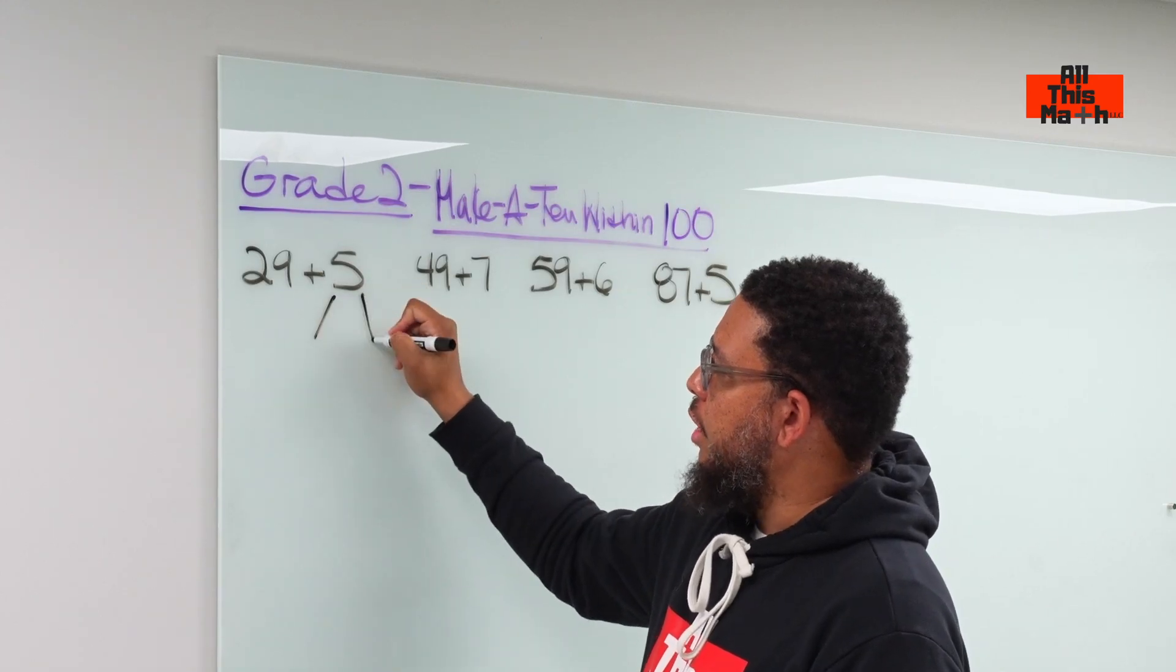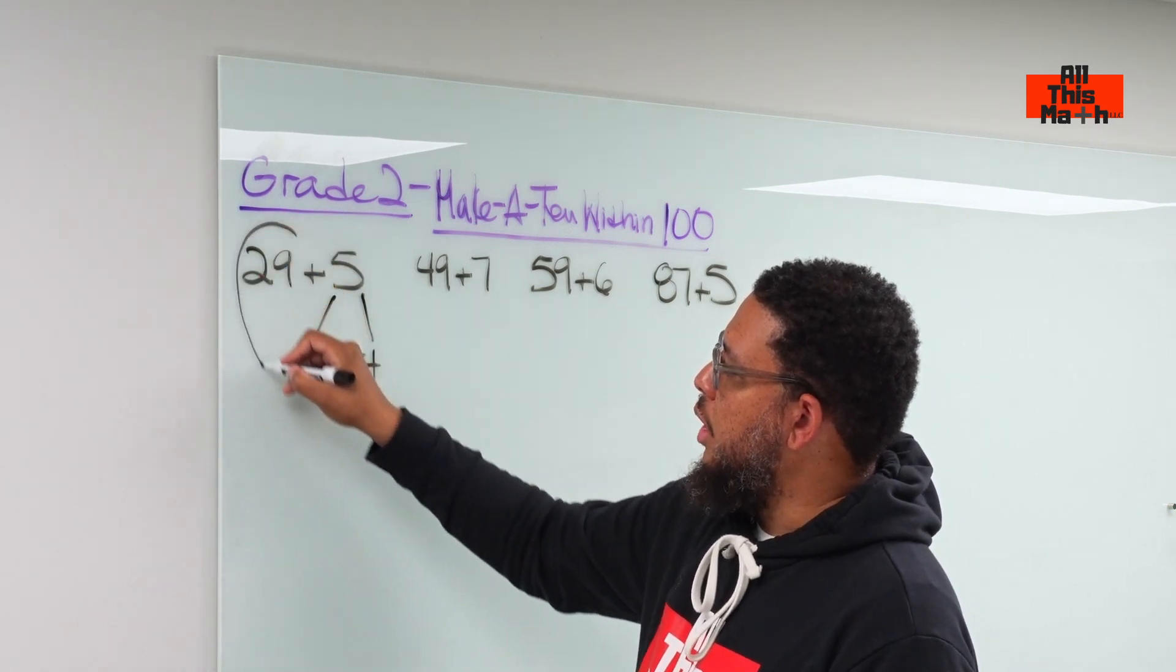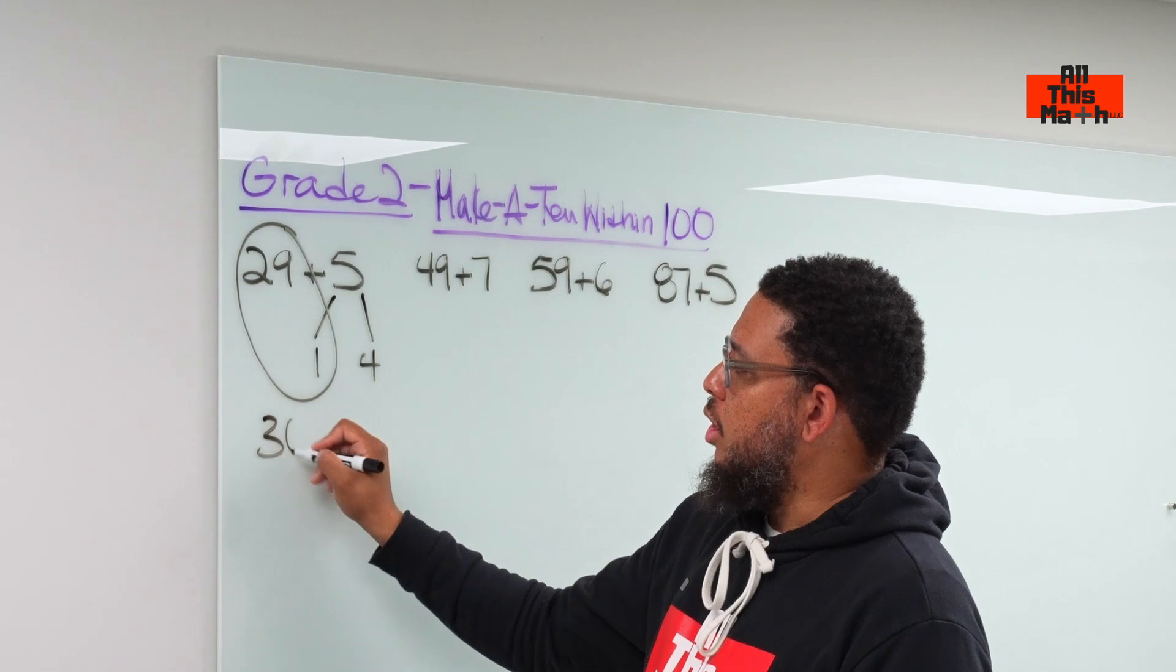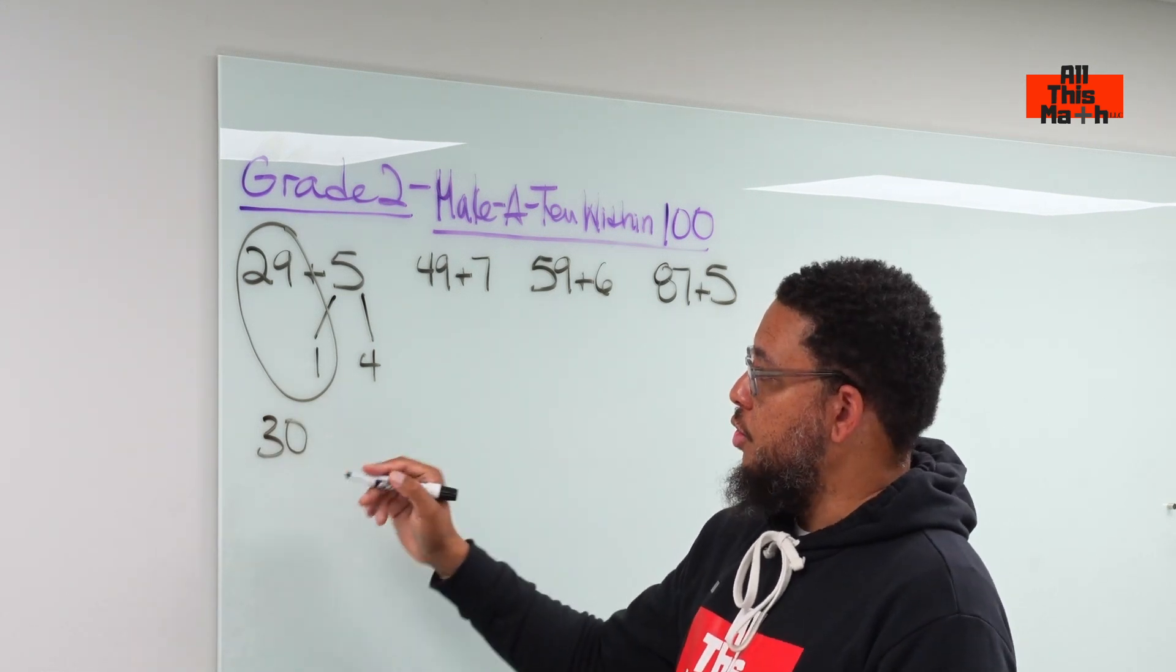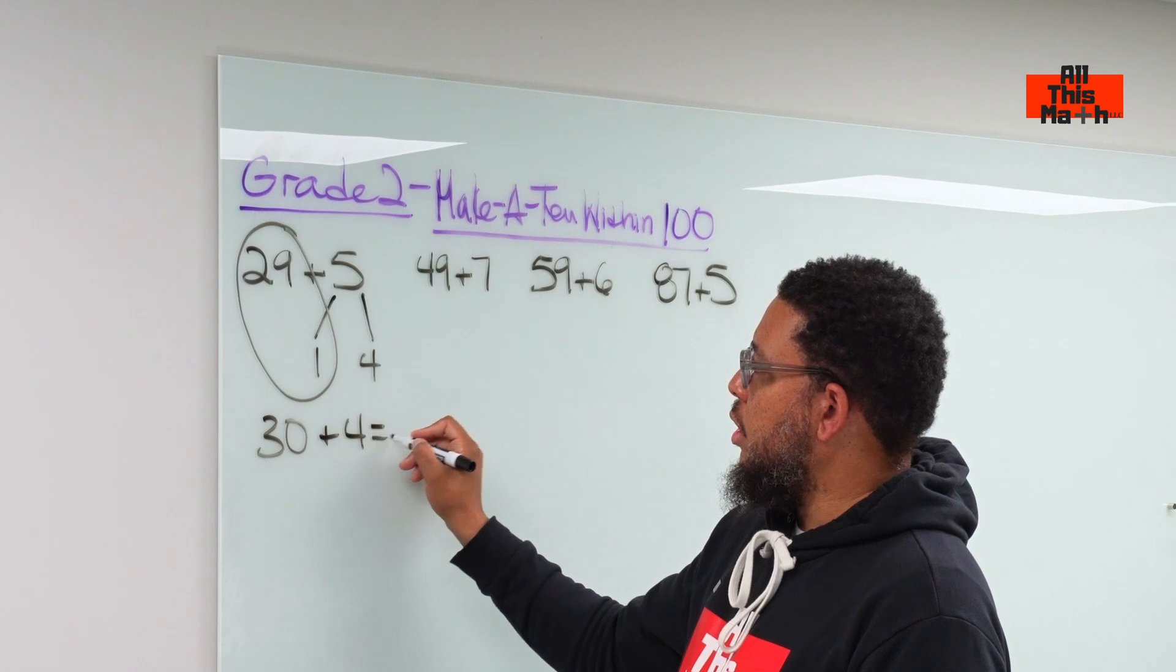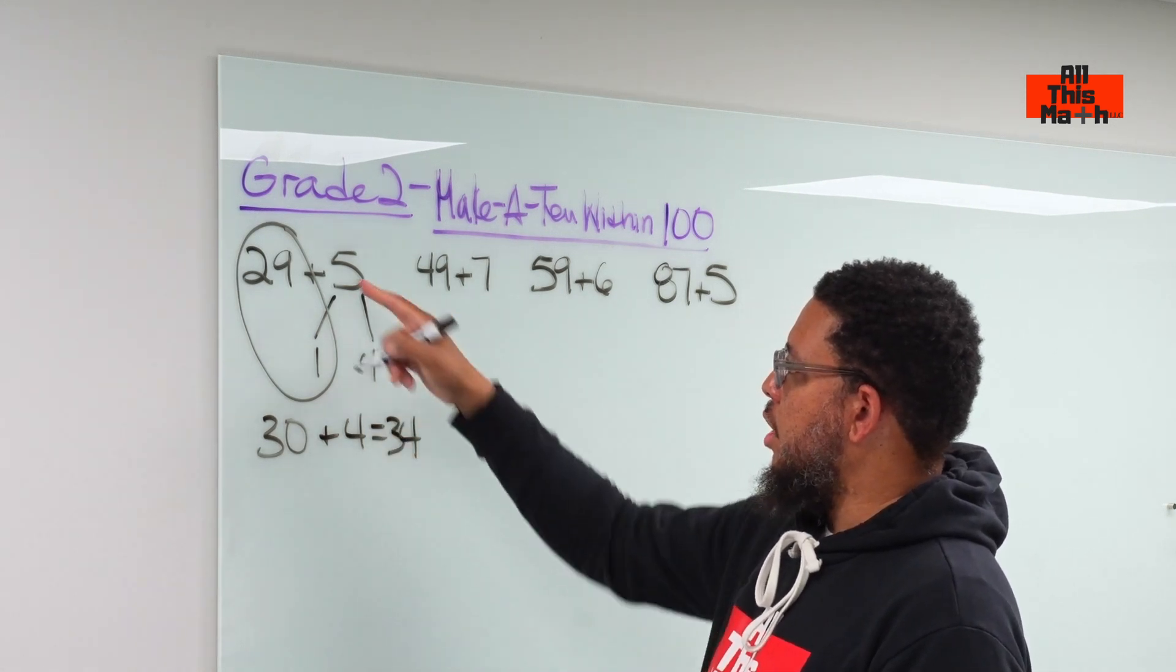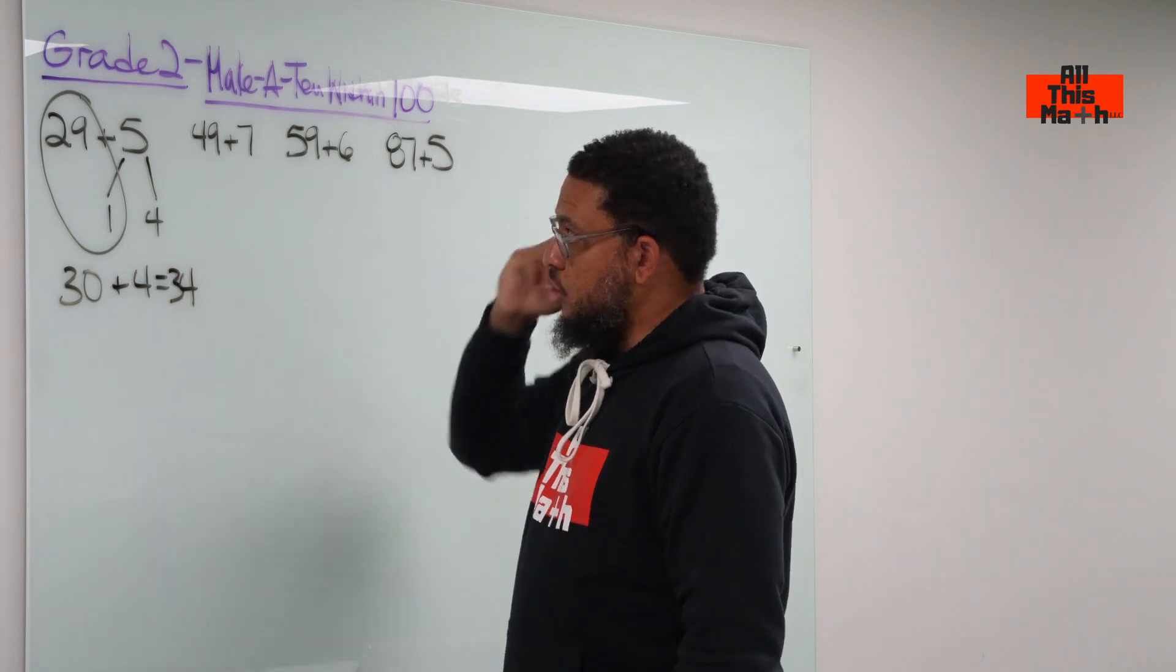So I need to break this 5 down into 1 plus 4. Then you put the 29 with the 1. We add those together. That's how we make our 10 or our multiple of 10, which is 30. And then we bring the 4 down. And then we have 30 plus 4, which is 34. That's the sum of this question, 29 plus 5.